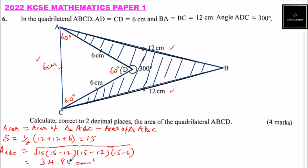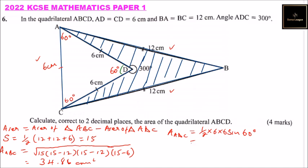The area of triangle ADC is straightforward because we know two sides and the included angle. We use the sine formula: area equals one half times 6 times 6 times sin(60°). This equals 18 times sin(60°), which gives approximately 15.59 centimeters squared.